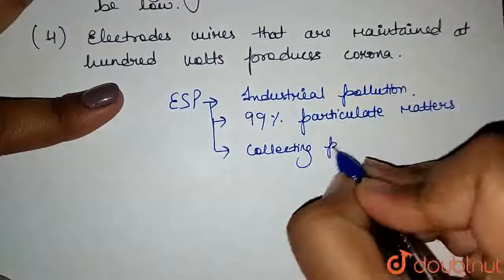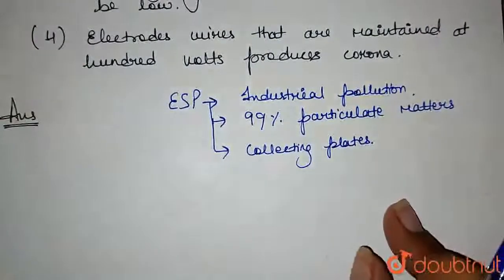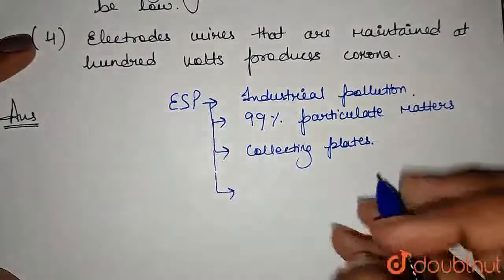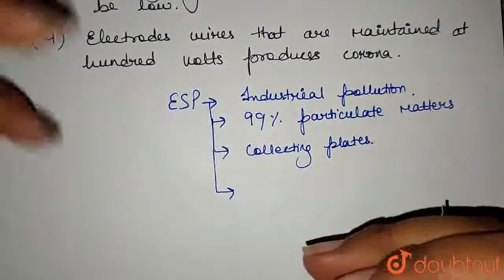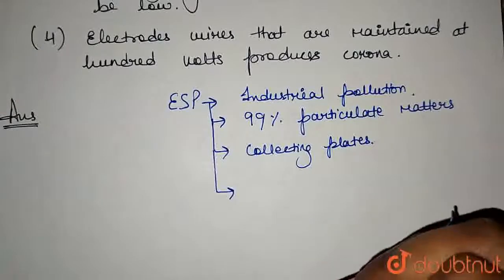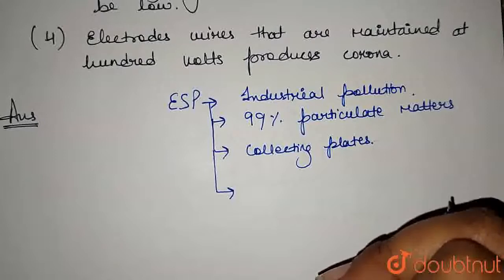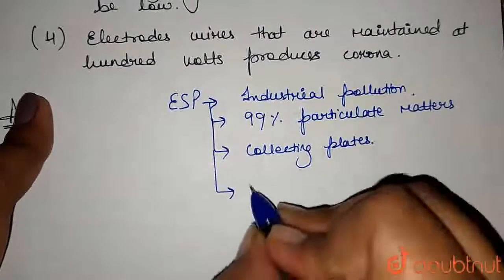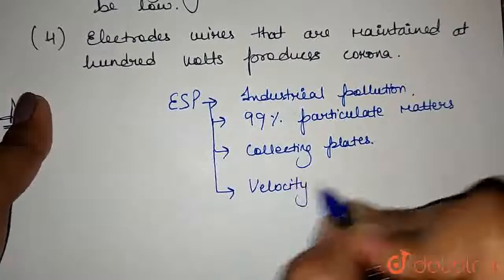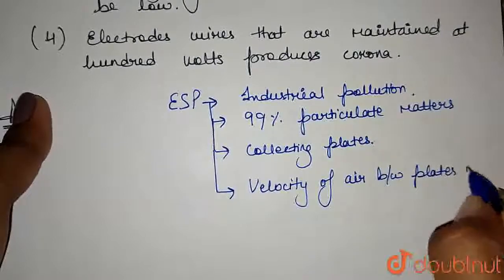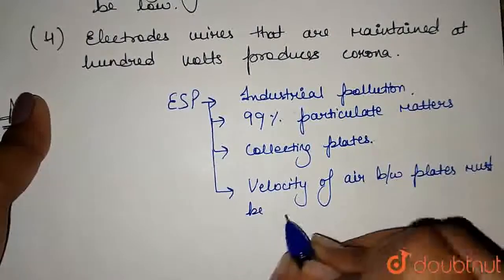The collecting plates are grounded — that is, they are connected to earth — so that the charged dust particles can fall off. The velocity of air between the plates must always be low so that the dust particles can easily fall off. If the velocity of air is too high, the dust particles will not fall and the process cannot continue.